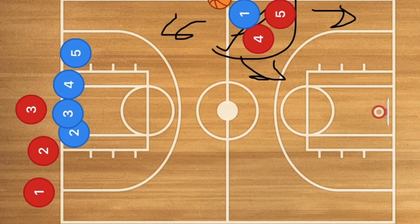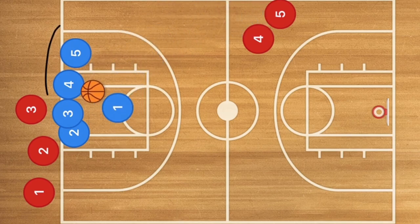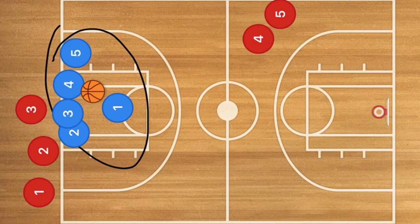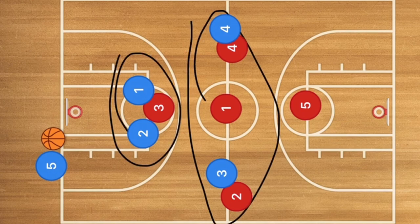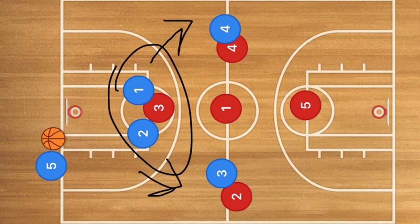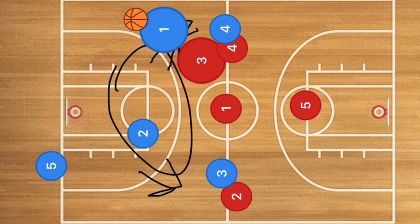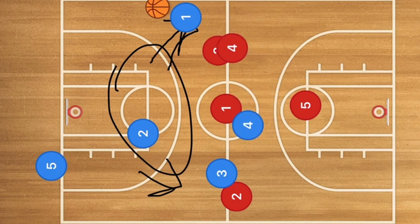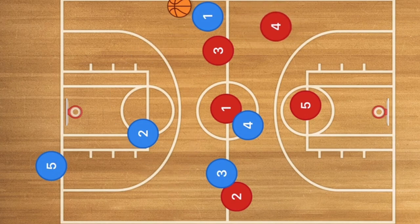Let's go over what a full court trap is. I like to show it on the clipboard because it makes things easier. A 1-3-1 full court press has one player up front, three players in the middle, and one player in the back. The player up front forces the ball handler to dribble to one side. Let's say player one gets the ball and player three forces player blue over to that corner and sideline.